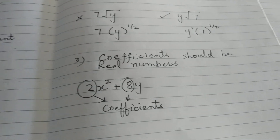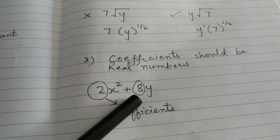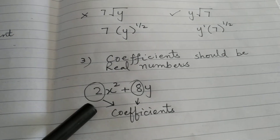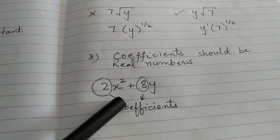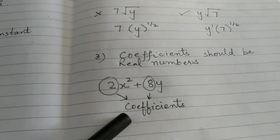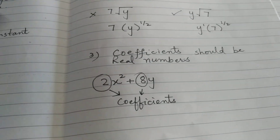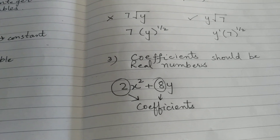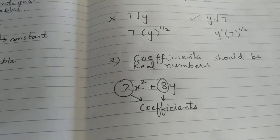The third condition is that the coefficients should be real numbers. For example, 2x squared plus 8y — here 2 and 8 are the coefficients, and these are real numbers. This is the third condition to identify polynomial or non-polynomial expressions.